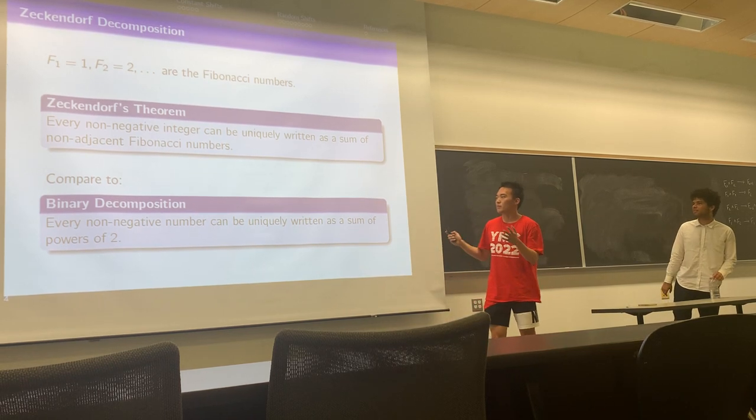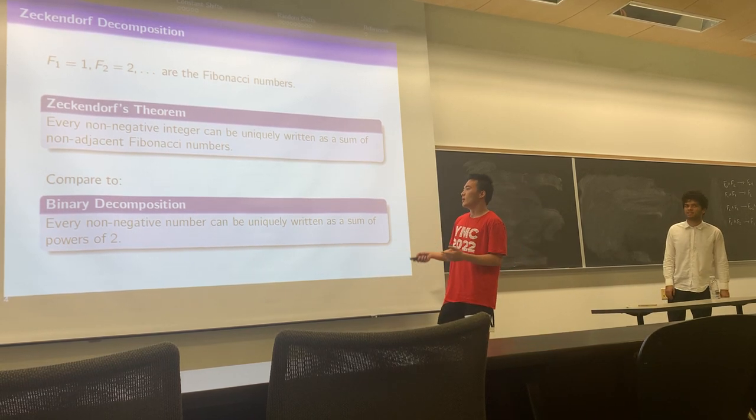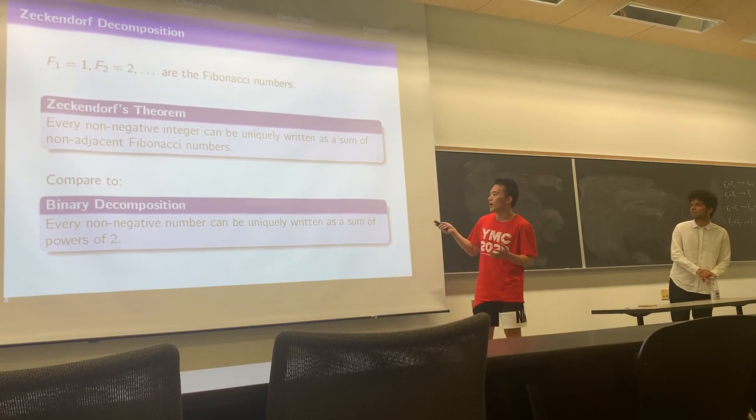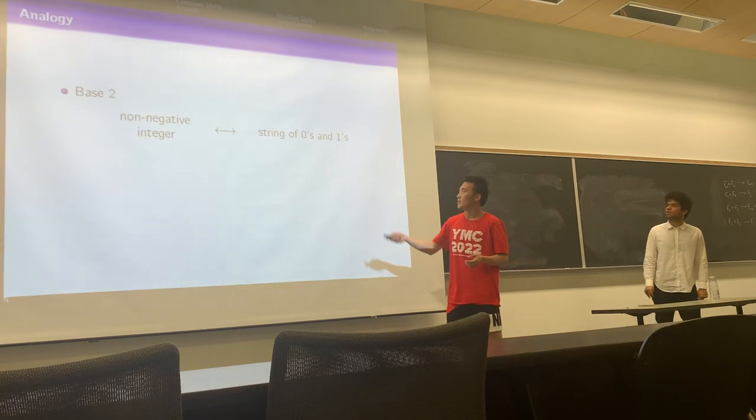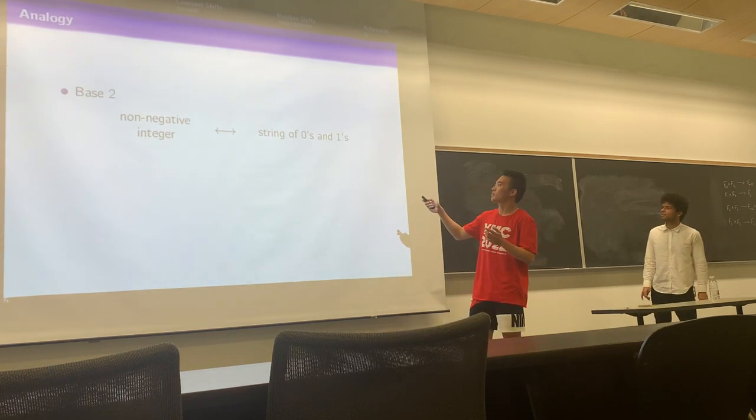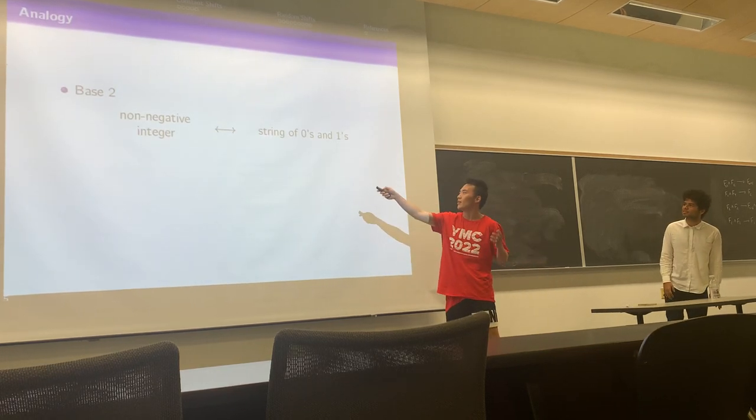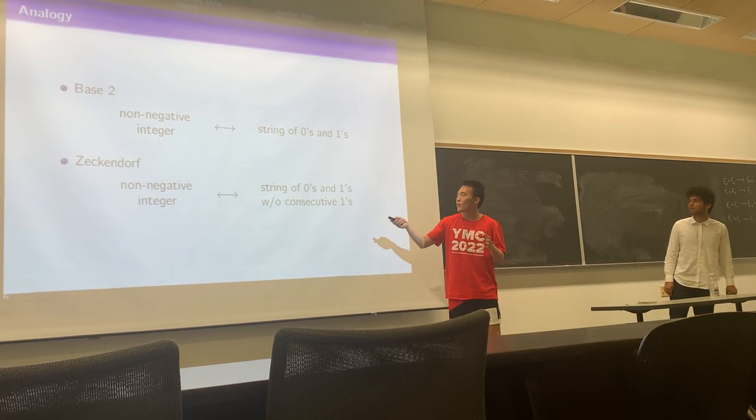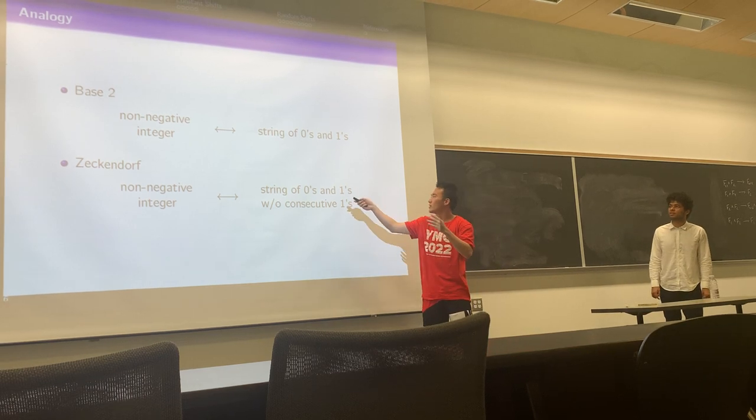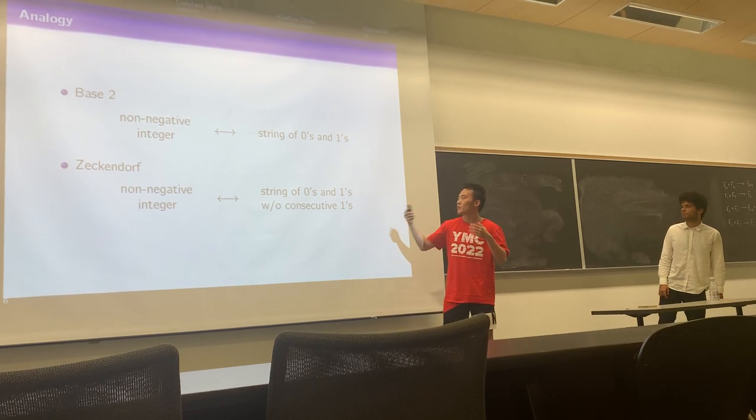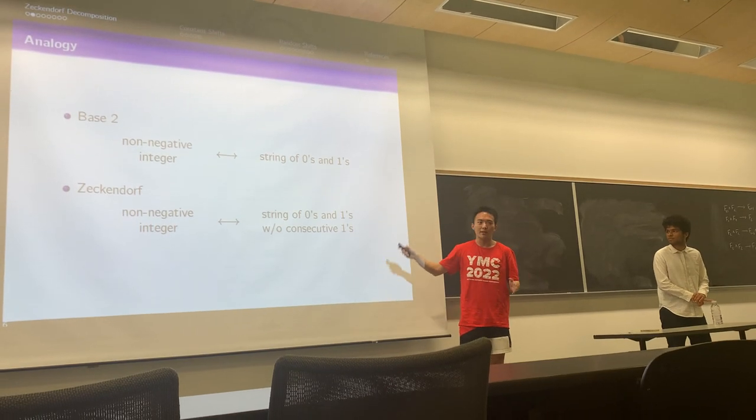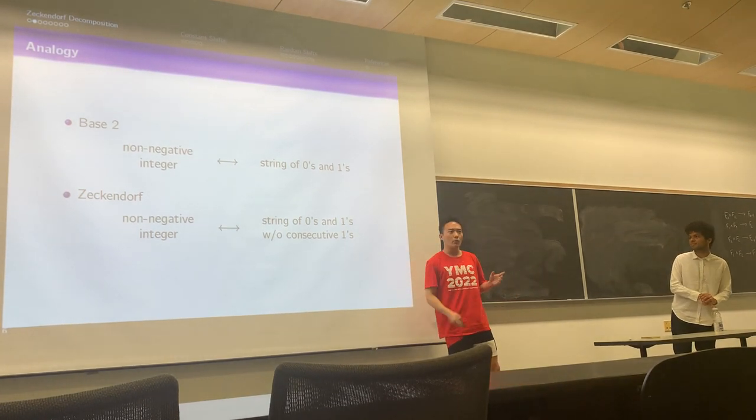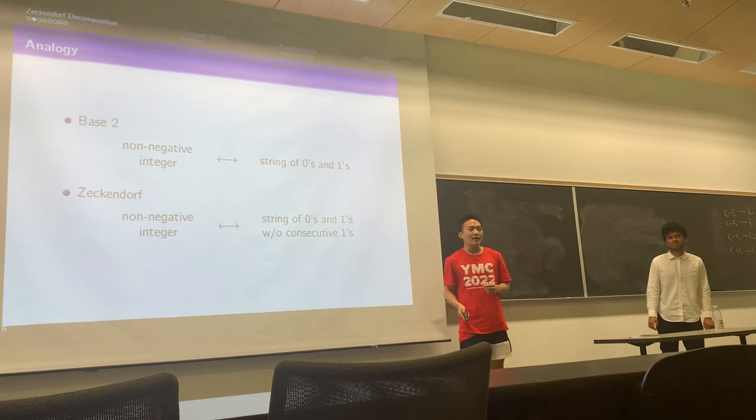Let's compare the Zeckendorf decompositions to the binary decomposition. We say every non-negative number can be uniquely written as a sum of powers of two. You can write any non-negative integer as a string of zeros and ones. For the Zeckendorf case, it's the same string of zeros and ones, except that we don't allow consecutive ones, because by the recurrence law of Fibonacci, if you have two consecutive ones, you get a one in the next position.